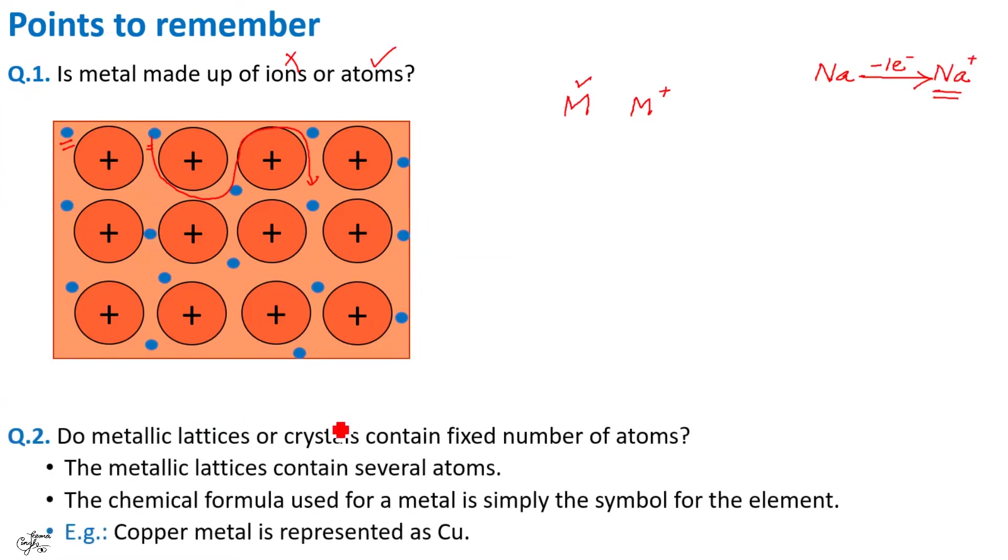The second point is, do metal lattices or crystals contain fixed number of atoms? The answer is no. Metallic lattices do not contain fixed number of atoms. There are several thousands of atoms with no fixed value. Therefore, the chemical formula used for a metal is simply the symbol for the element. For example, copper metal is represented as Cu even though a piece of copper contains plenty of copper atoms.